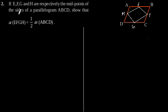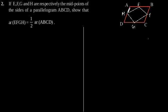Exercise 9.2, Question number 2. If E, F, G and H are respectively the midpoints of the sides of a parallelogram ABCD, show that the area of EFGH is equal to half of the area of ABCD. Suppose this is our required figure with parallelogram ABCD which has midpoints E, F, G and H respectively. Now let us join H and F with a straight line.